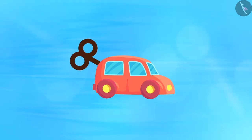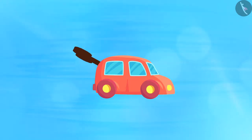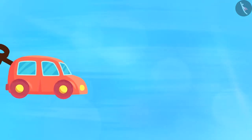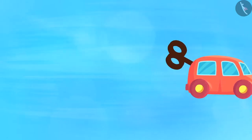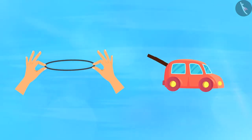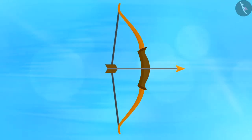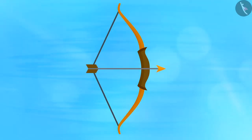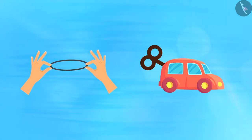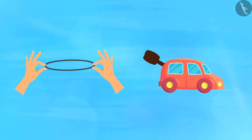Now take a toy car and wind it with its key, then place the car on the ground and you will notice that the car starts moving. Where does the car get the energy to move? In all of these instances, the object stored the energy from the work done on it. When an object doesn't use the energy transferred to it to cause any change in its speed or velocity, it is stored in the form of potential energy. You transfer the energy when you stretch the rubber band or wind up the key of the toy car.